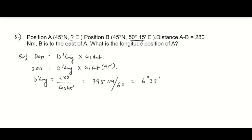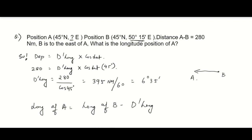Since B is to the east of A, A is on the westerly side. So to find A's longitude: longitude of A = longitude of B minus difference in longitude = 50°15' minus 6°35' = 43°39'. Therefore, the longitude of position A is 43°39'E.